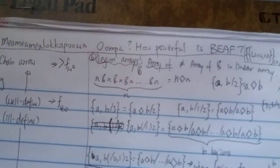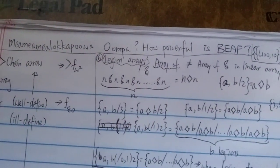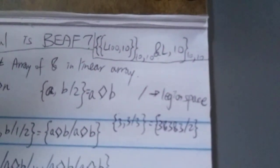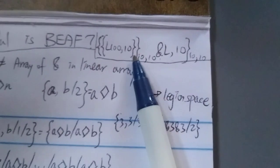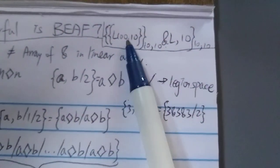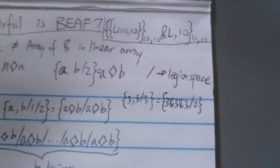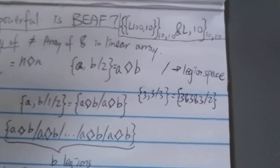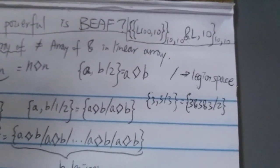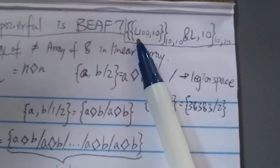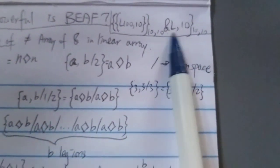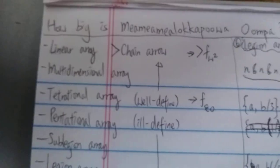This number we know is a very very big number — a legendary number written in this way — but most of you probably don't understand what this is, including myself, and I spent a week or more just trying to study BEAF. Many people ask: what is L, what is the subscript, and what does this notation mean? So in this video we're trying to find out.